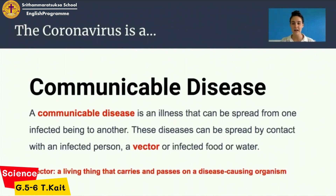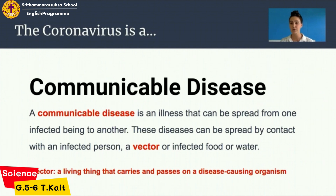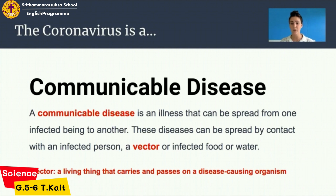The coronavirus is a communicable disease. This is one of our vocabulary words — a communicable disease is an illness that can be spread from an infected being to another. These diseases can be spread by contact with an infected person, a vector, or infected food and water. Specifically for the coronavirus, we're going to talk about vectors. A vector is a living thing that carries and passes on a disease-causing organism. This virus started in animals — one of our vectors — and then passed on to another vector, humans. From one person getting this virus, it has passed on to more people.